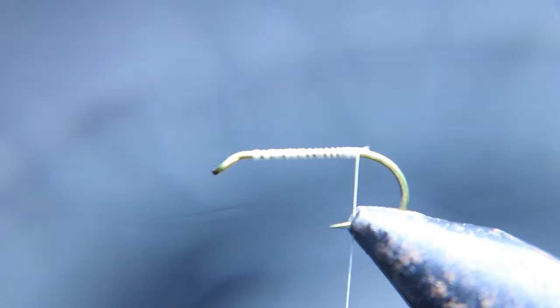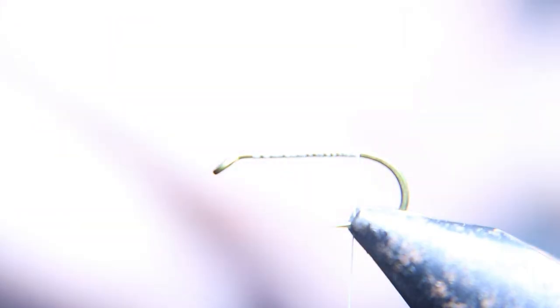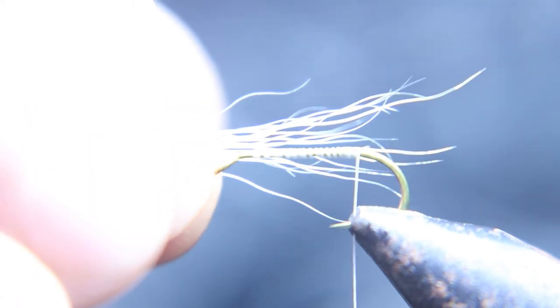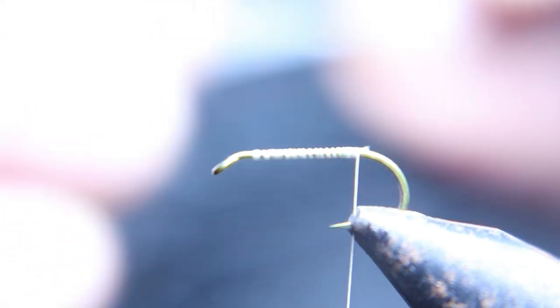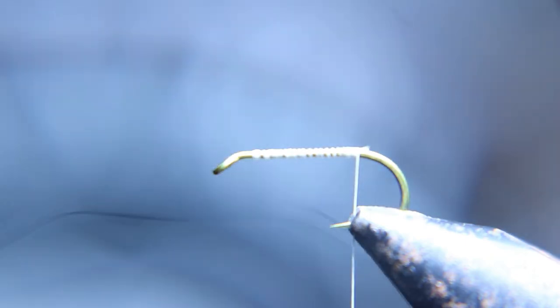Now we're going to tie in a couple strands of white deer tail. Measure the tail. Make sure it's the right length. Tie it in.